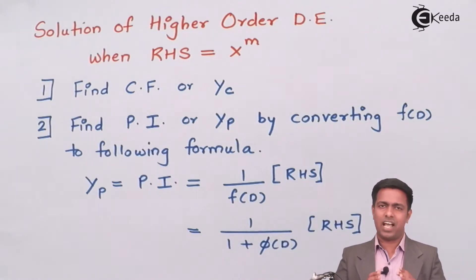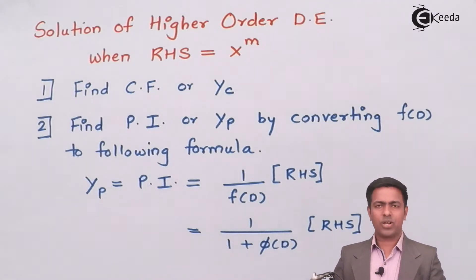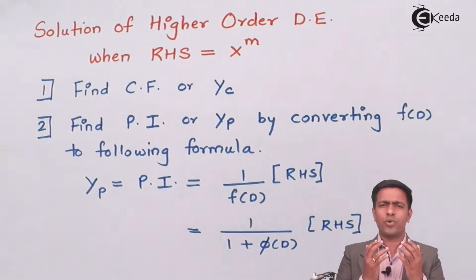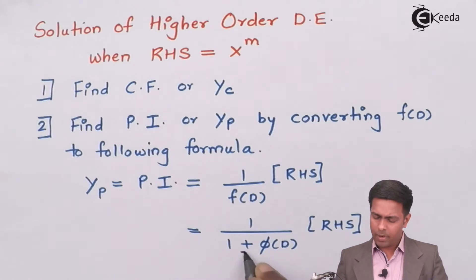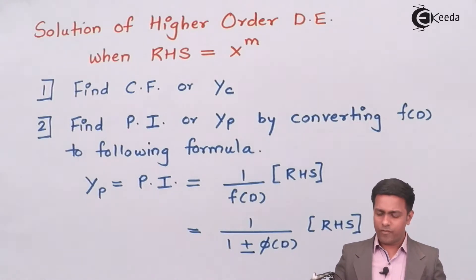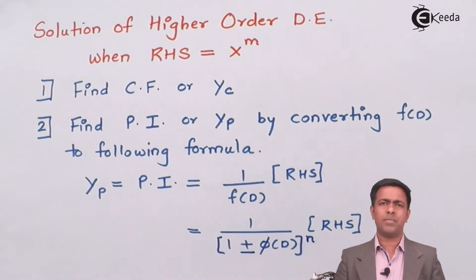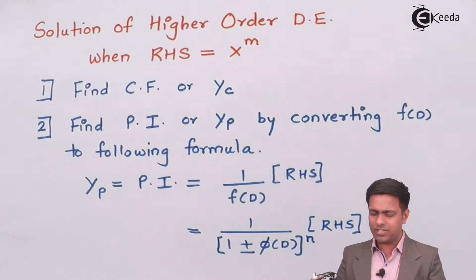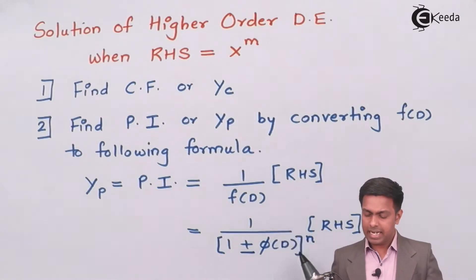In our case, the right hand side is x raised to m, or any polynomial. In the denominator we have f(D), and we need to convert that f(D) into the form 1 plus or minus φ(D), raised to some power n — where n can be 1, 2, or 3. If we succeed in bringing the denominator into this format, we can move it to the numerator.